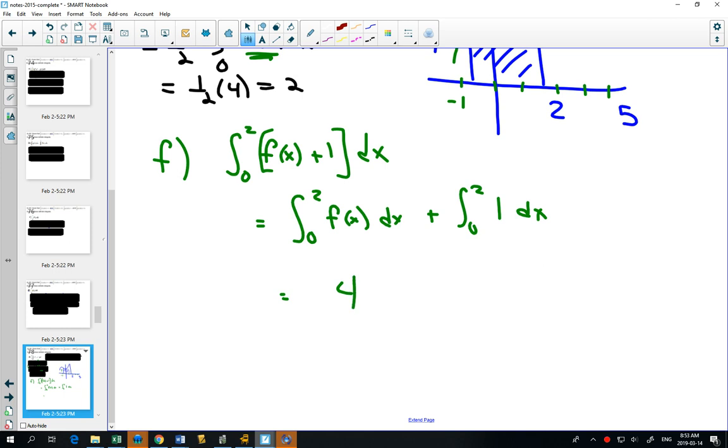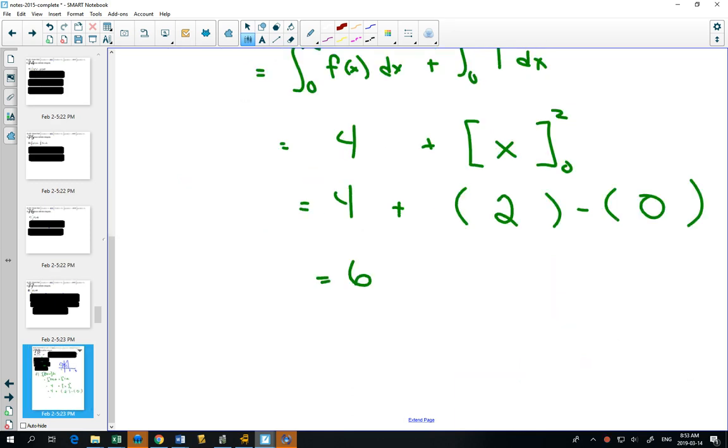This one we know is 4. And this is just a regular definite integral. How do you integrate 1? Definite integral from 0 to 2. If you work backwards, you would get just x. And then figuring out our definite integral, plug in the first one, plug in the second one. 2 minus 0 would be 2. 4 plus 2, this area would be 6.